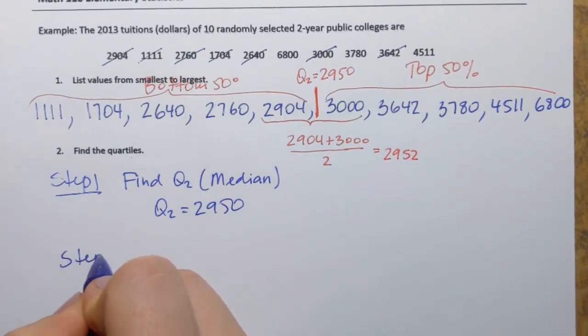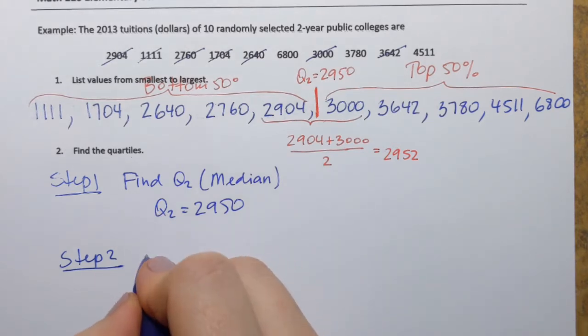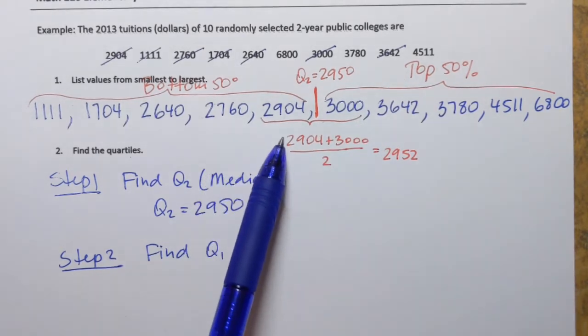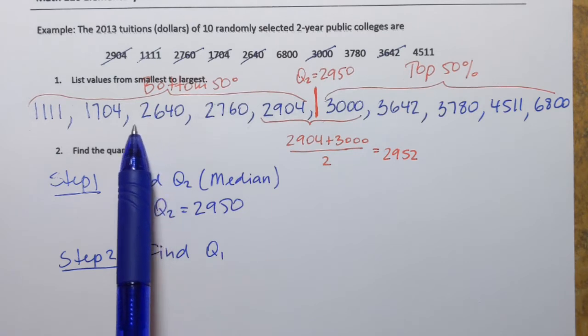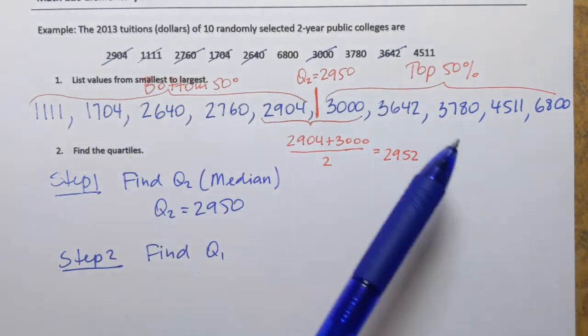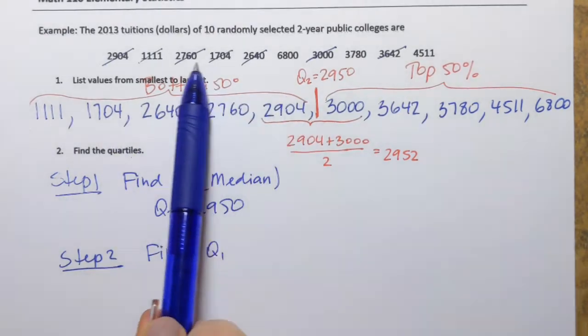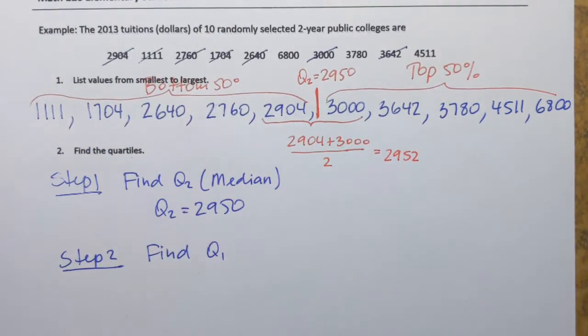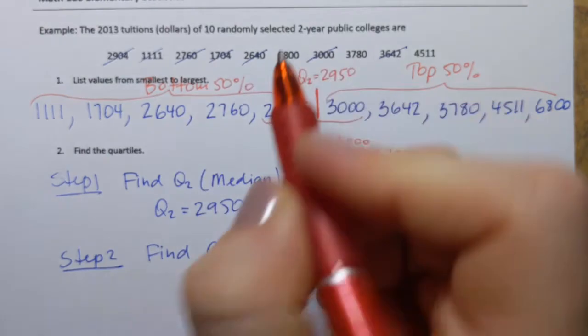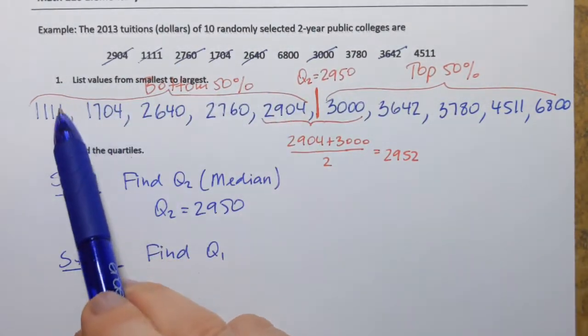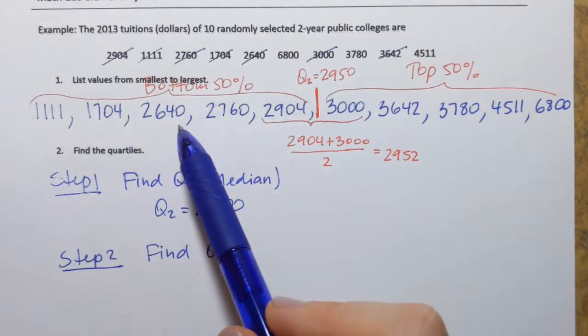Now in step two, we'll need to find Q1. We'll just go in order, it doesn't matter at this point. So find Q1. How do we find Q1? Remember that Q1 separates the first 25% from the entire data set. So Q1 is going to be right in the middle of the bottom 50% of my data set. So what I need to do is to take the bottom 50% of the data set and find its median.